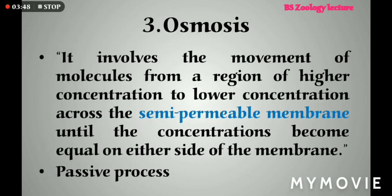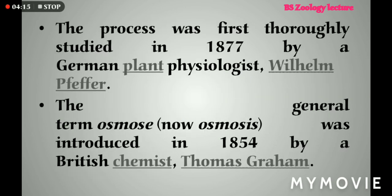The third type is osmosis. Osmosis specifically relates to the movement of water molecules across a semi-permeable membrane from a highly concentrated area towards a lower concentrated area until both sides become equal. This is also a type of passive transport because it does not require any type of energy. This process was first studied by a German plant physiologist in 1877, and the general term osmosis was introduced by the British chemist Thomas Graham in 1854.